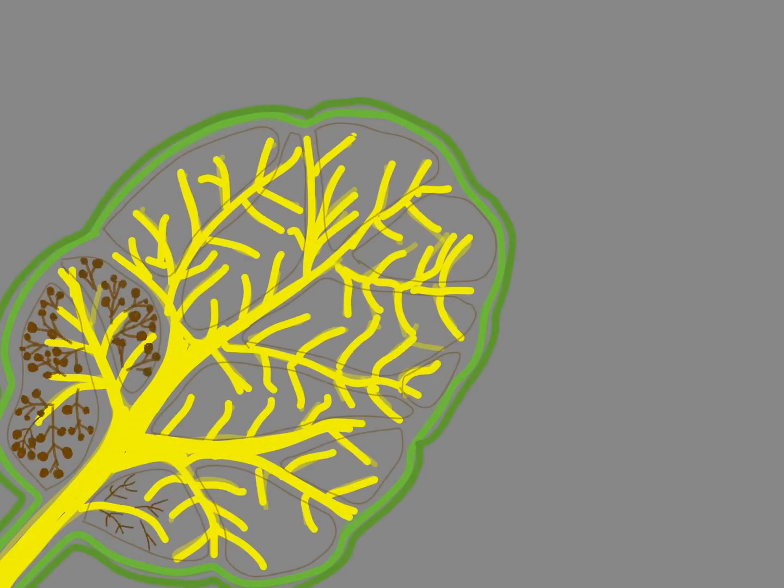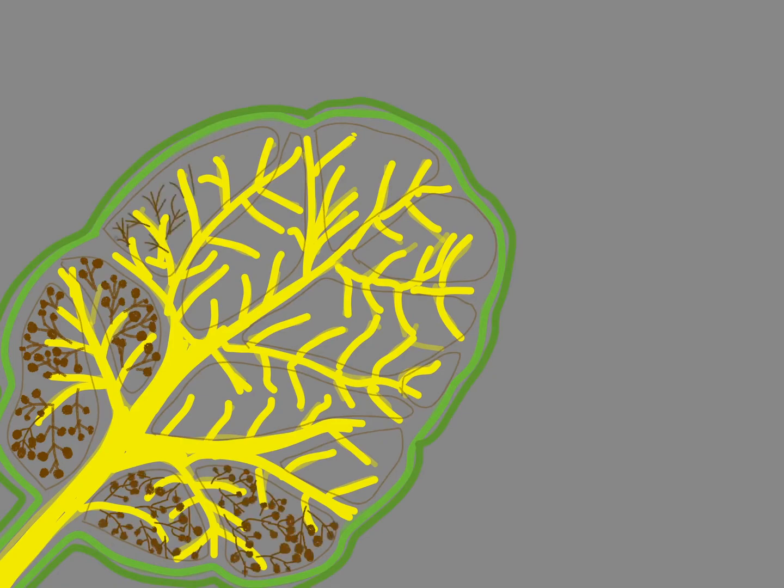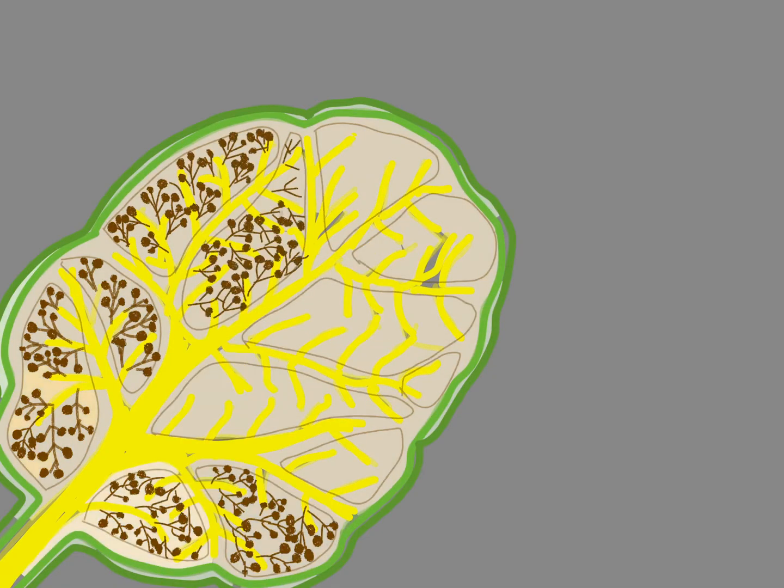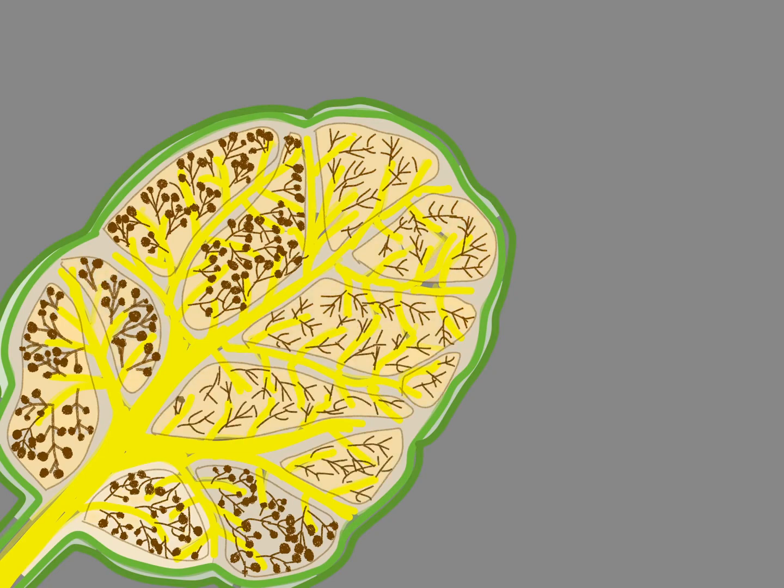Inside the gland, the duct runs through the connective tissue septum and branches repeatedly until it reaches the smallest secretory portions of the gland called acini.